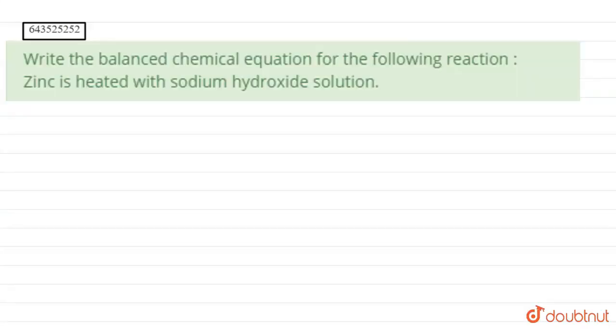Hello students, in the given question, we have to write the balanced chemical equation for the following reaction. Okay, so the reaction is zinc is heated with sodium hydroxide solution and we just need to write the balanced chemical equation when this process occurs.